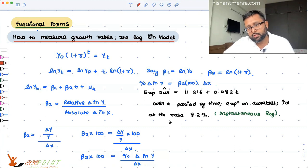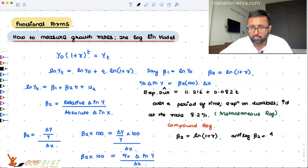You can also find something which is called the compound rate of growth. Compound rate of growth is: you have written beta 2 as log of (1 plus r). So I need to get the value of r first. So I'll do antilog. Antilog beta 2 equals antilog of log(1 plus r). So what will that be? This will be just 1 plus r, and this is antilog beta 2.